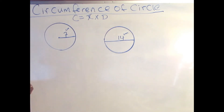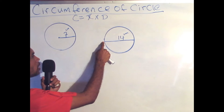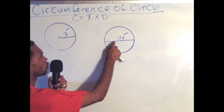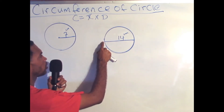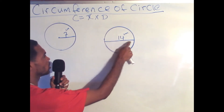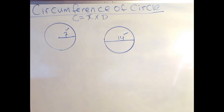The diameter is the line that goes across the circle from west to east. Nevertheless, we want to go straight into the problem.